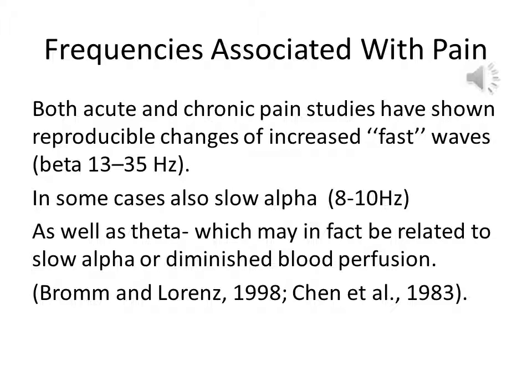Studies consistently continue to report changes in brainwave activity due to pain. The frequencies associated with pain vary. Both acute and chronic pain studies have shown reproducible changes of increased fast waves — that is, beta 13 to 35 Hz. In some cases, also changes in slow wave activity, 8 to 10 Hz.